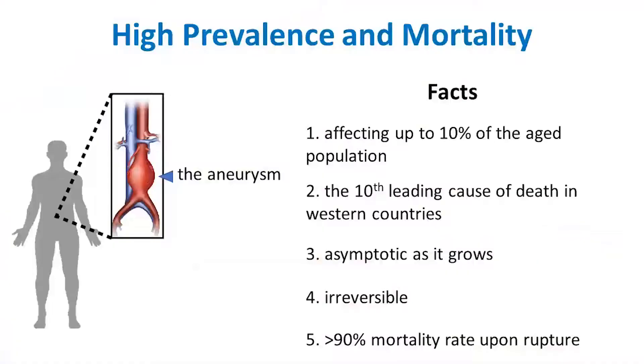Abdominal aortic aneurysm, or AAA for short, is a common disease that affects 10% of people who are 65 years or older. It is the 10th leading cause of death in Western countries.